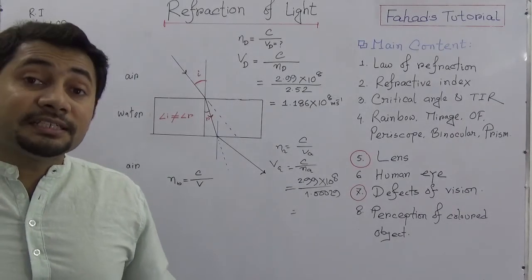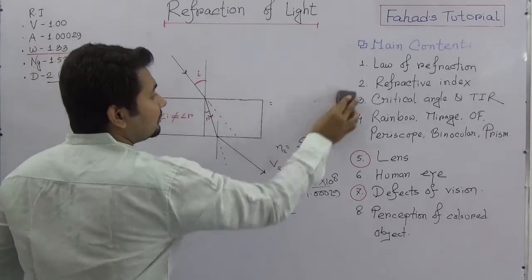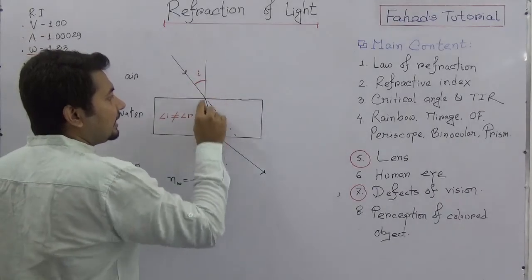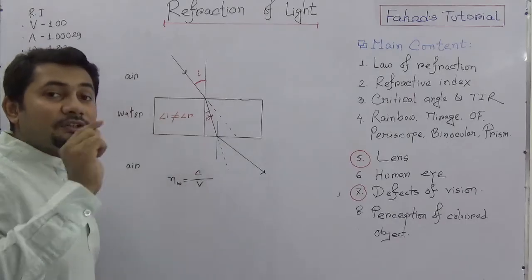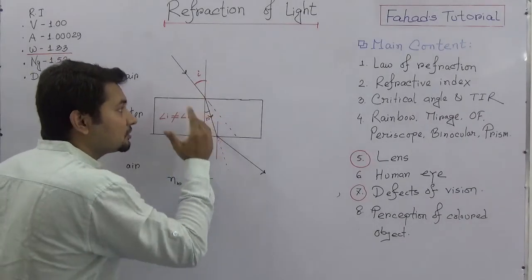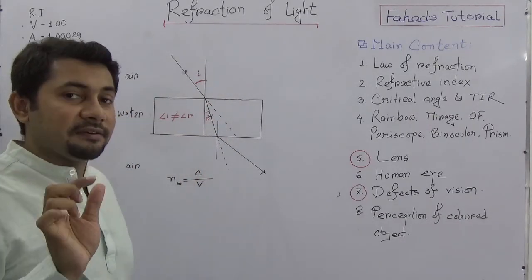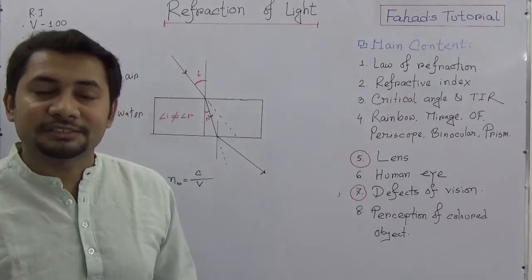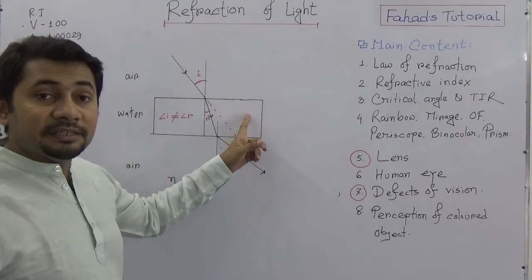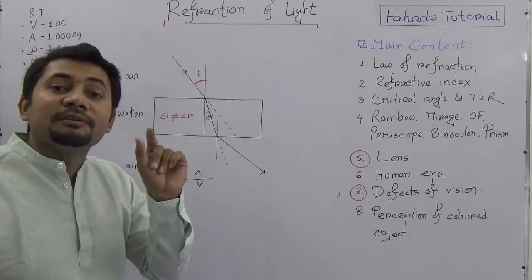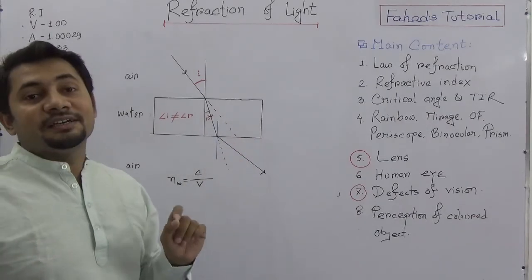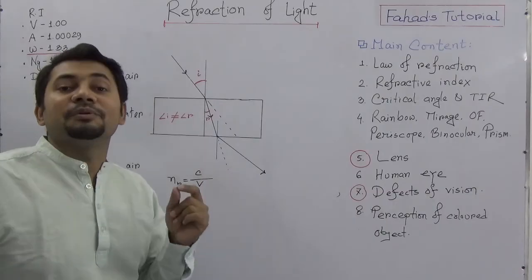Now think about why this is related to angles. The angle of incidence I and the angle of refraction R are not the same because light changes its direction of motion — and this is another part of the laws of refraction. When light enters from a rarer medium to a denser medium, the angle of refraction will be less. And when light enters from a denser medium to a rarer medium, the angle of refraction will be bigger.